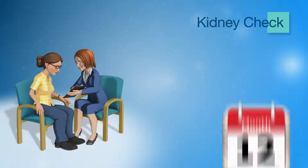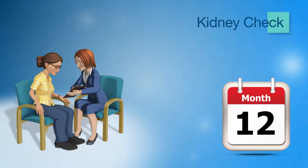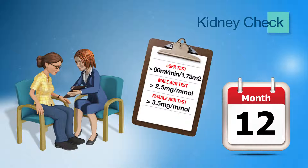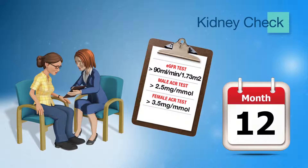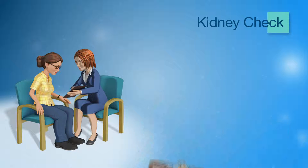It is recommended that you have your kidney function checked once a year through a blood and urine check. The blood test checks the rate that the kidneys are filtering blood, called the glomerular filtration rate or GFR. The urine check measures the amount of protein present in the urine, as the presence of protein may be an early sign of damage to the kidneys.